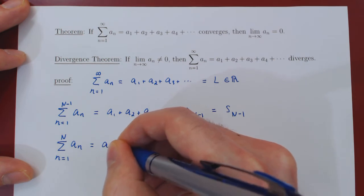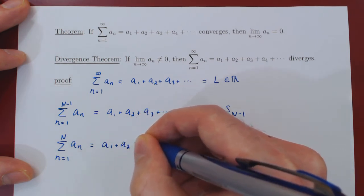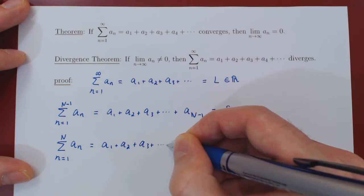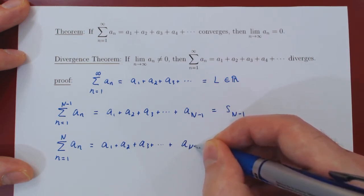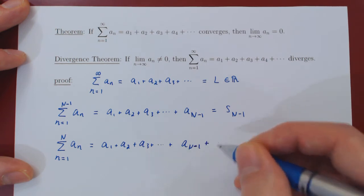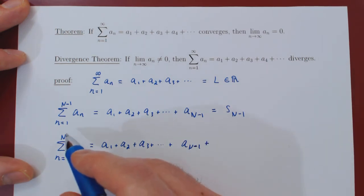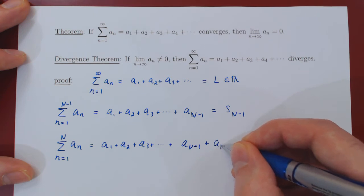So this will be a_1 plus a_2 plus a_3 plus dot dot dot plus a_{N-1} plus a_1. So the last term N is uppercase N is a sub uppercase N.